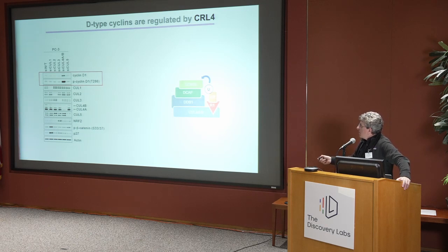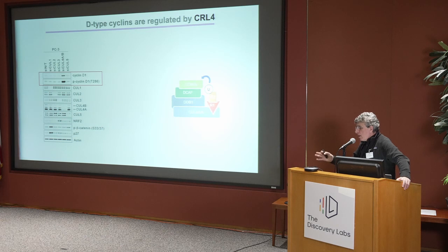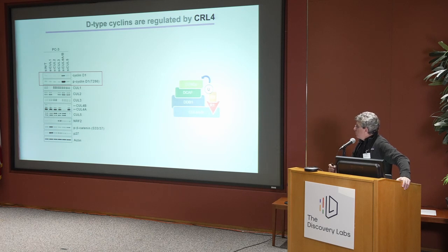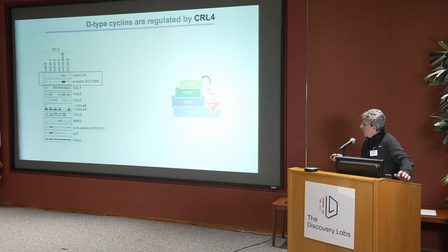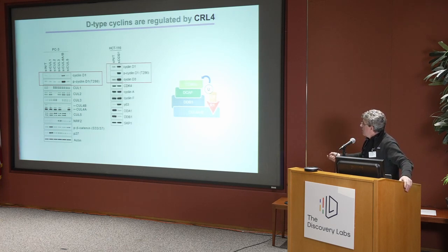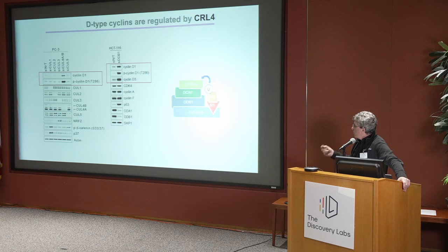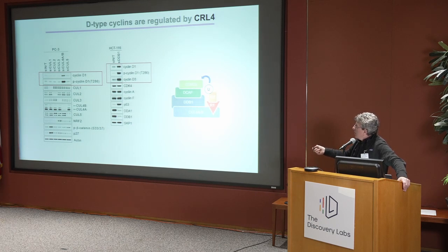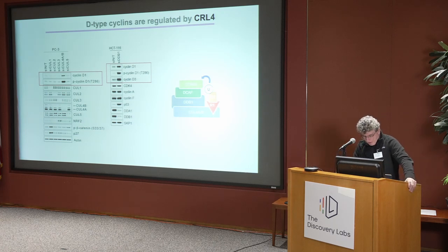It is known that cyclin D1 is phosphorylated on threonine 286. When it's phosphorylated, it's unstable — this amino acid is typically mutated in cancer to stabilize cyclin D1 and promote cell growth. We thought, okay, if it's not Cul1, it must be a Cul4-dependent ligase. Cul4 has another common subunit, DDB1, which is a sort of assembly factor. If you down-regulate DDB1, you also stabilize cyclin D1 and cyclin D3, and you accumulate the phosphorylated form of cyclin D1. The conclusion is we don't believe CRL1 has anything to do with it — it must be CRL4.